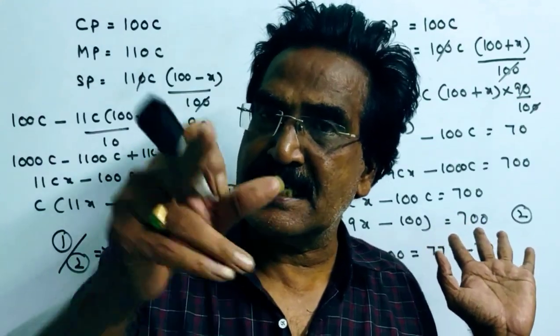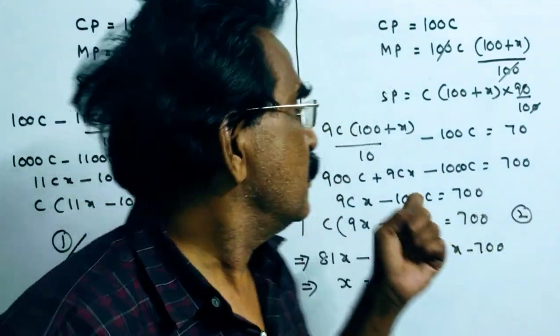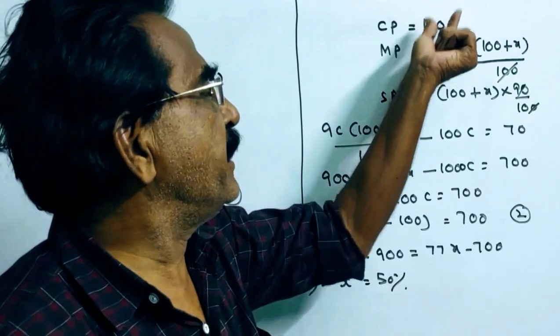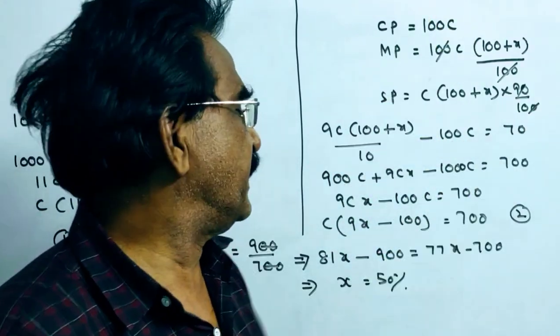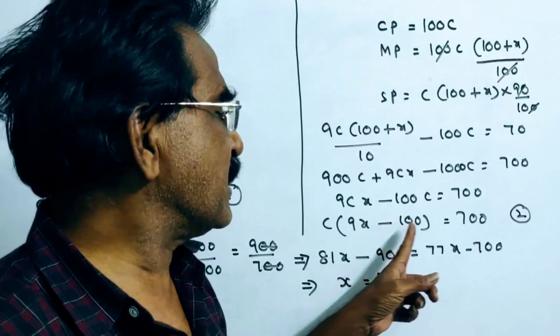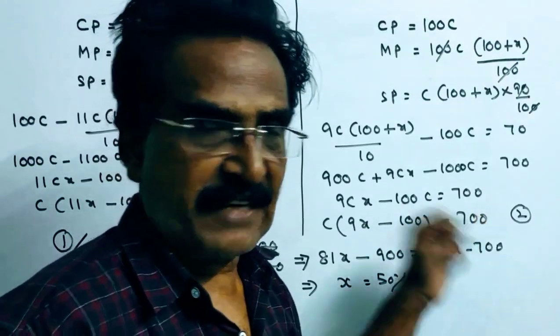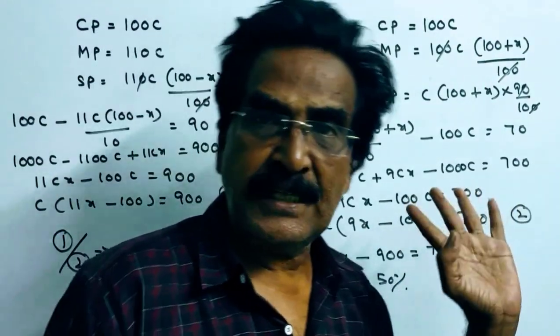Here in this transaction, he gets a profit of Rs.70. So sold price minus cost price is equal to 70. It comes to C into 9x minus 100 is equal to 700. Say this is equation 2.